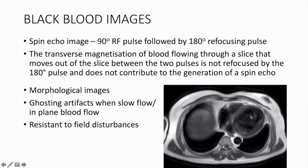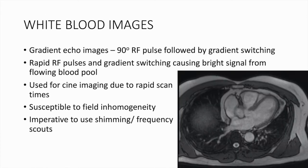However, black blood sequences can result in ghosting artifacts especially when there is slow flow of blood or in-plane blood flow. The gradient echo sequences produce white blood contrast due to rapid RF deposition and gradient switching, causing saturation of static tissue and a bright signal from flowing blood. White blood images are used for cine sequences due to rapid scan times but are susceptible to field inhomogeneities, so it is imperative to use shimming or frequency scouts while doing gradient echo sequences.